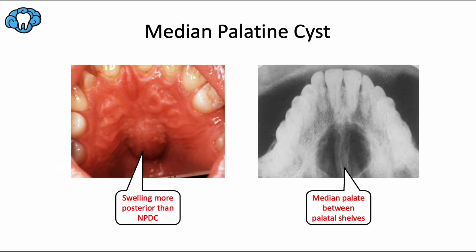The median palatine or palatal cyst is another fissural cyst, this time due to entrapped epithelium along the line of fusion between the two palatal shelves. These are rare non-odontogenic lesions that do not involve the incisive papilla or the incisive canal — they occur more posteriorly than the nasopalatine duct cyst, which you can appreciate on both the clinical photo and the radiograph. They are soft, fluctuant swellings that can occur anywhere along the median palate posterior to the pre-maxilla, the roughly triangular-shaped portion of bone containing the maxillary incisors. Recommended treatment is enucleation or removal of the entire cyst.